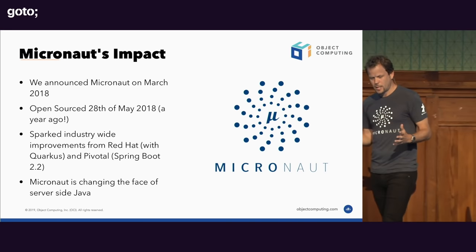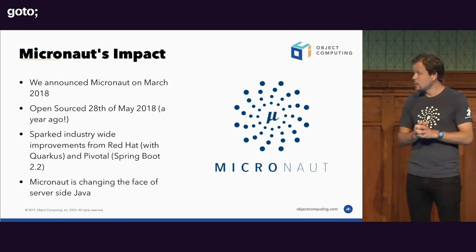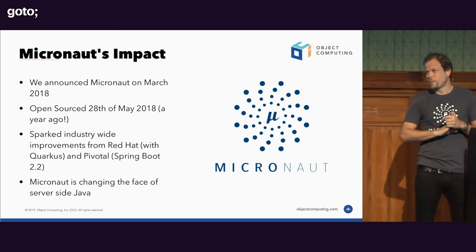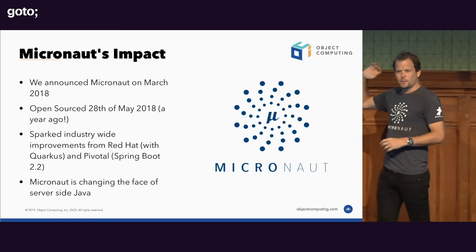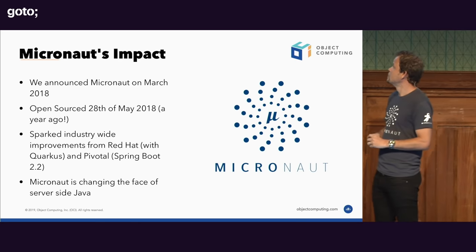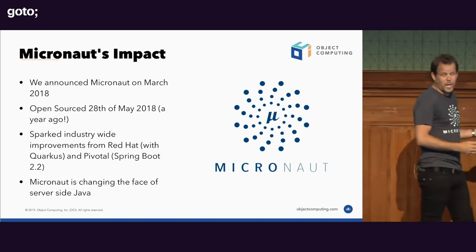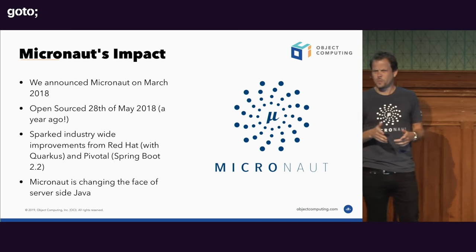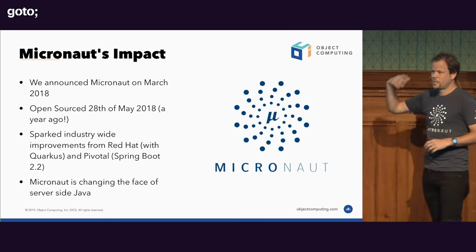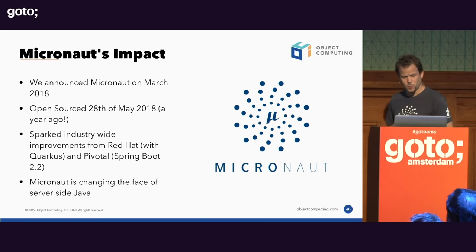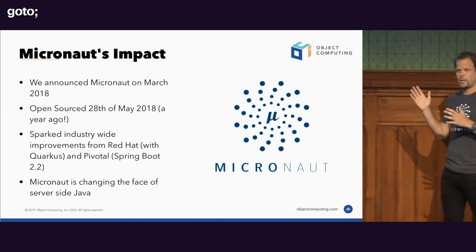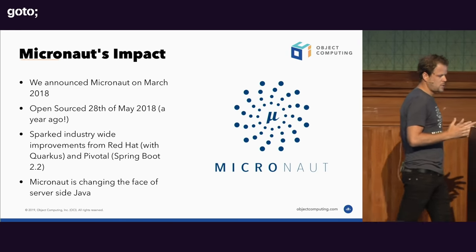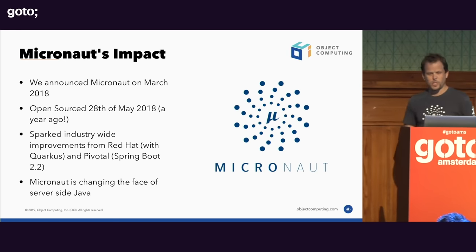Micronaut has had a huge impact since we announced it in March 2018. We open-sourced it on the 28th of May. It sparked industry-wide improvements from companies like Red Hat and Pivotal. Spring Boot 2.2 starts up a whole bunch faster. Red Hat came up with something called Quarkus — curiously, with its first commit exactly a month after Micronaut was open-sourced — which uses ahead-of-time compilation for reflection-free DI. Micronaut is changing the face of server-side Java.